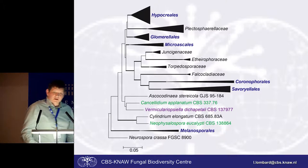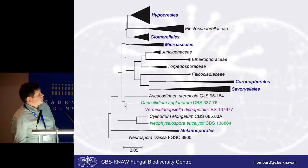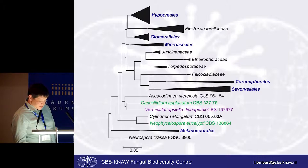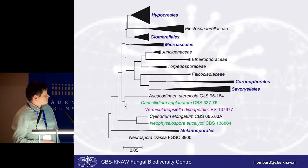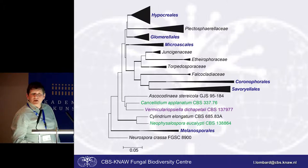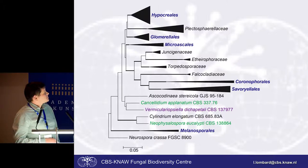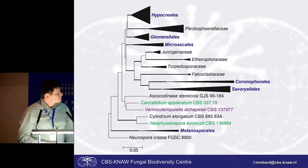This is the tree based on LSU. What we actually see is that most of the orders — all the orders — are monophyletic. Then we have some families which have not yet been placed in any order, and some genera that have not been classified either.